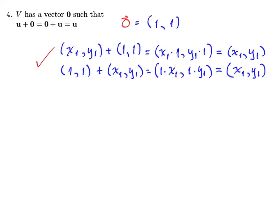So let's move on to the fifth axiom. The fifth axiom says that for every vector in this set, for every ordered pair in R², there's another ordered pair that we call negative u, such that when we add those two things together, u plus its additive inverse, we'll get the zero vector. And remember, the zero vector in this particular set is (1, 1).